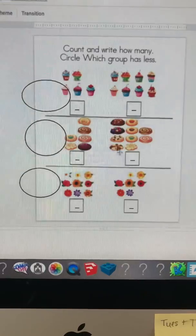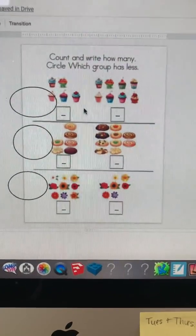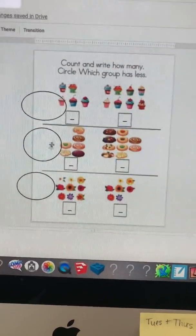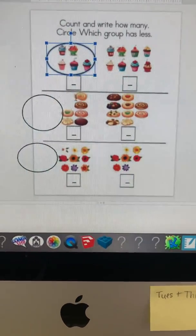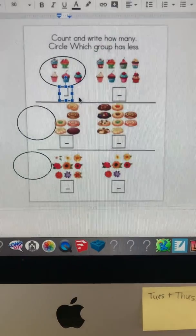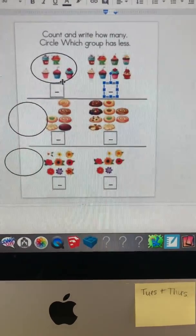On the next page, it says count and write how many, then circle which group has less. I've already given you a circle. You're going to move that circle with your child and have them fill in the dashes with numbers.